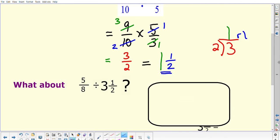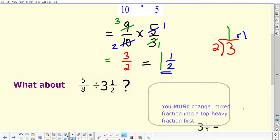So what if we had a fraction that looked like this: we had 5 over 8 and we were having to divide it by 3 and a half, which is a mixed number. Now you've come across multiplication with mixed numbers, and in that case we had to change the mixed number into an improper fraction, and that is exactly what we have to do here.